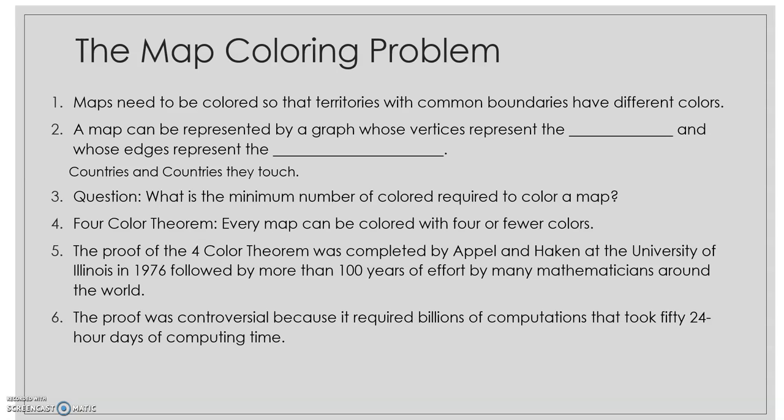The four-color theorem states that every map can be colored with four or fewer colors. The proof of the four-color theorem was completed by Appel and Hagen at the University of Illinois in 1976, followed by more than 100 years of effort by many mathematicians around the world. The proof was controversial because it required billions of computations that took fifty 24-hour days of computing time.